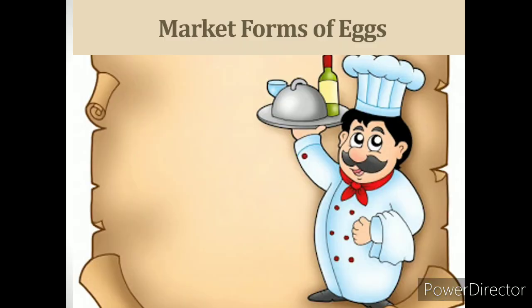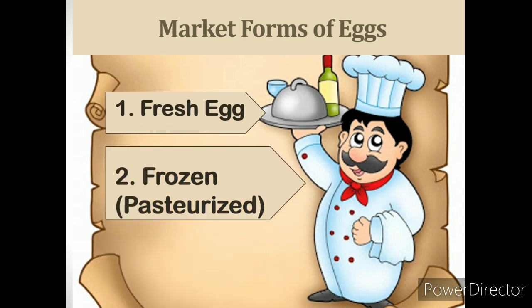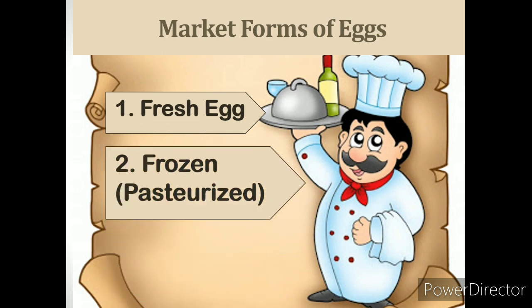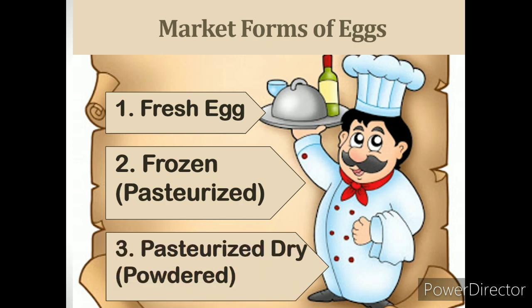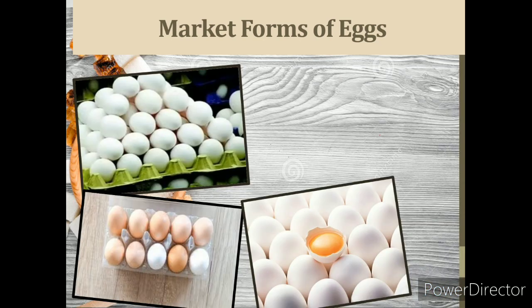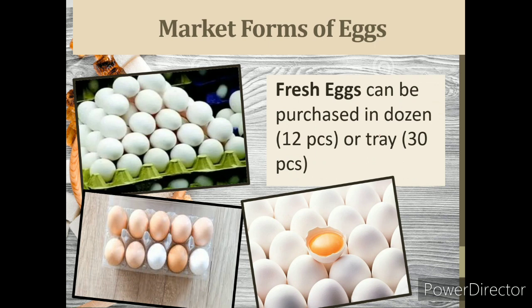Egg is available in many forms at the market. The market forms of eggs are: 1. Fresh egg, 2. Frozen or pasteurized, and 3. Pasteurized, dried, or powdered. The first market form is the fresh egg. It can be purchased by the dozen — twelve pieces — or by tray for thirty pieces.